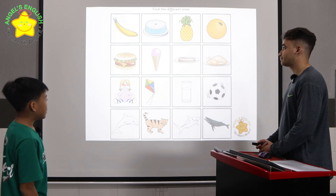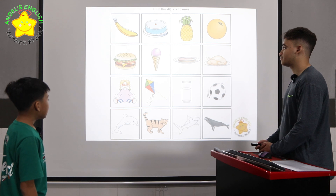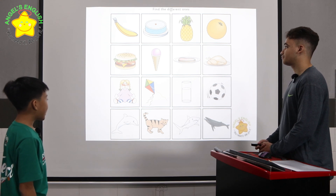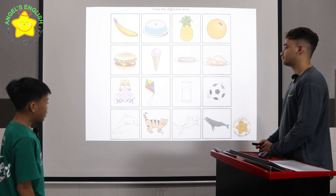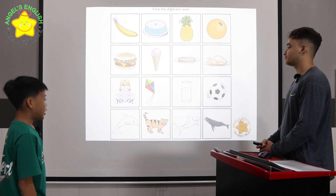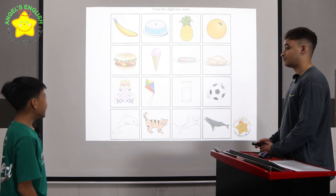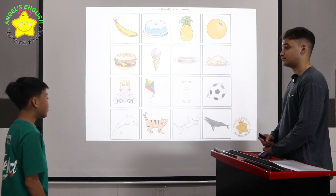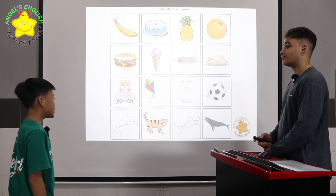The glass of water is different because the door, the kite and the bowl are toys. The cat is different because dolphin, shark and the whale live in the sea. Okay, you did a very good job. You may now sit down. Bye.